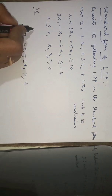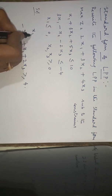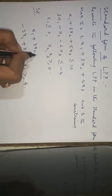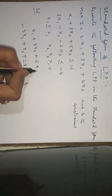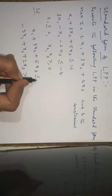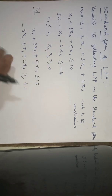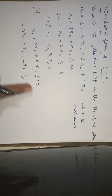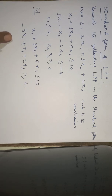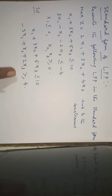The first constraint I write as it is: x1 plus 3x2 plus 5x3 is less than or equal to 10. The second constraint had minus 4 on the right side, so I multiplied both sides by minus 1 and obtained the new form.